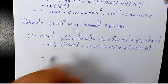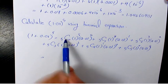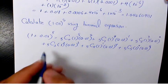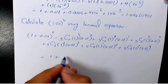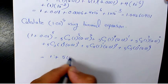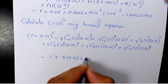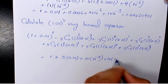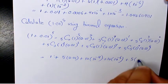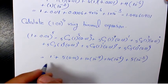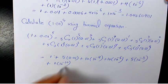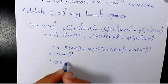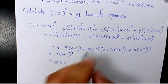The binomial coefficients are 1, 5, 10, 10, 5, 1. So we get 1 times 1 plus 5 times 0.01 plus 10 times 10 to the power of negative 4 plus 10 times 10 to the power of negative 6 plus 5 times 10 to the power of negative 8 and finally 1 times 10 to the power of negative 10, which gives us 1.0510100501.